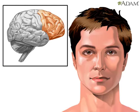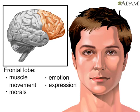Voluntary body movements are controlled by a region of the frontal lobe. The frontal lobe is also where we shape emotional reactions and expressions.